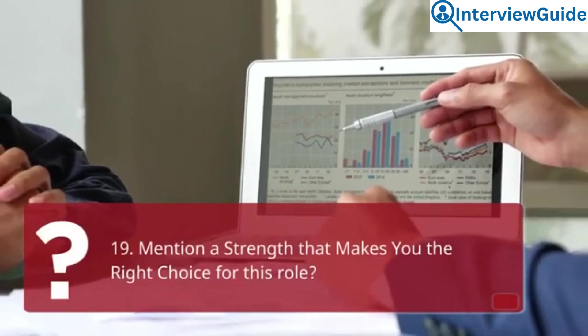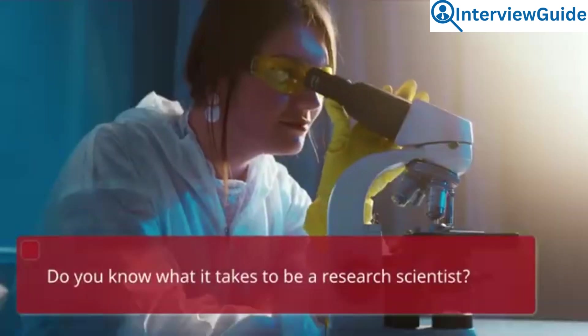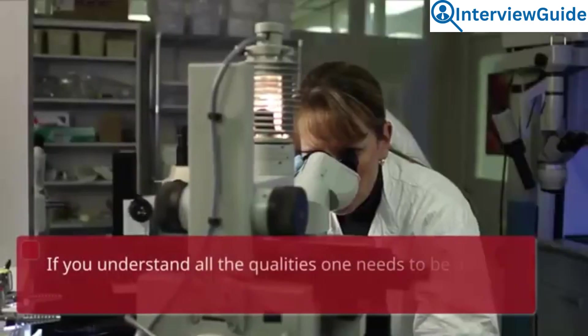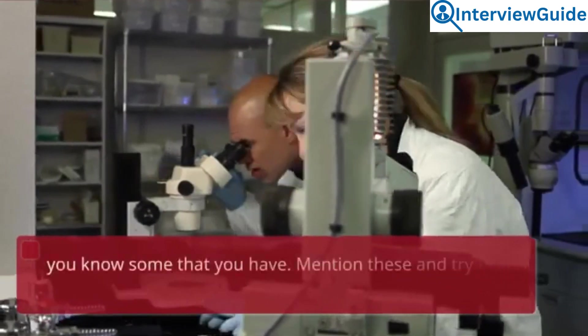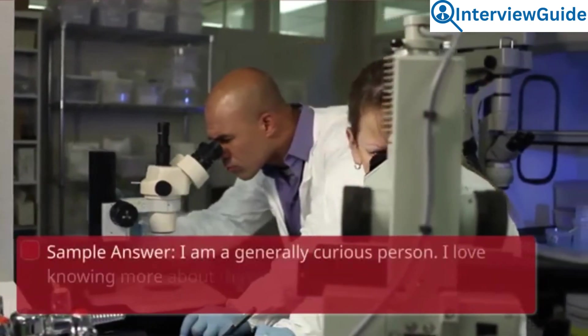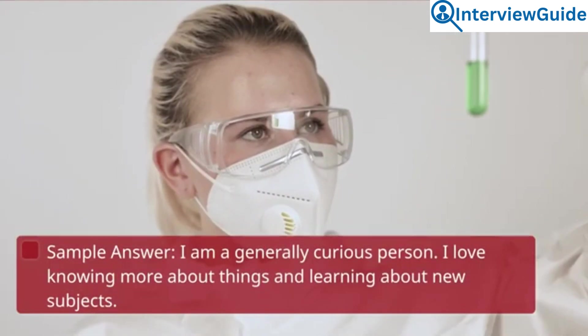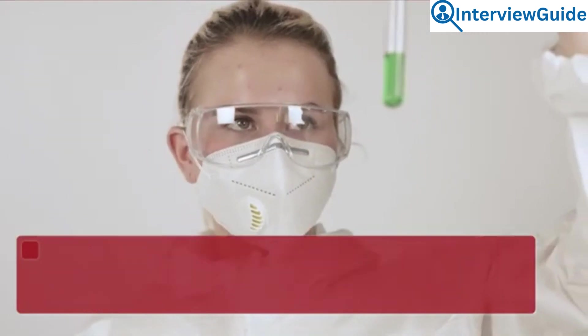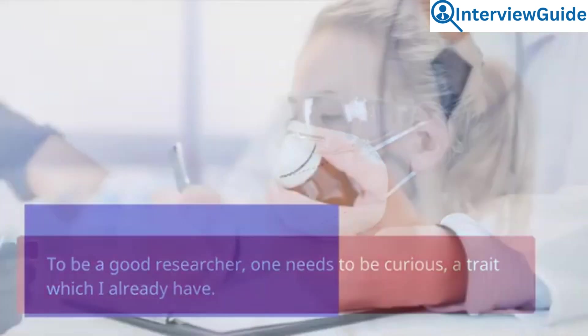Question 19: Mention a strength that makes you the right choice for this role. Do you know what it takes to be a research scientist? If you understand all the qualities one needs to be a research scientist, you know some that you have. Mention these and try to relate them to the role. Sample answer: I am a generally curious person. I love knowing more about things and learning about new subjects. To be a good researcher, one needs to be curious, a trait which I already have.